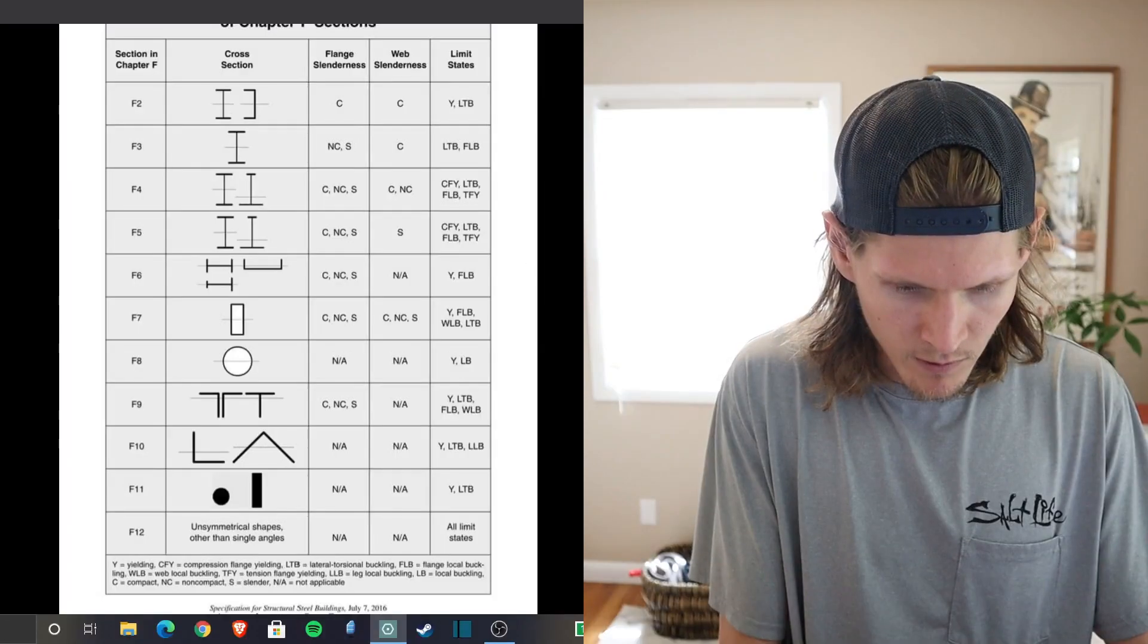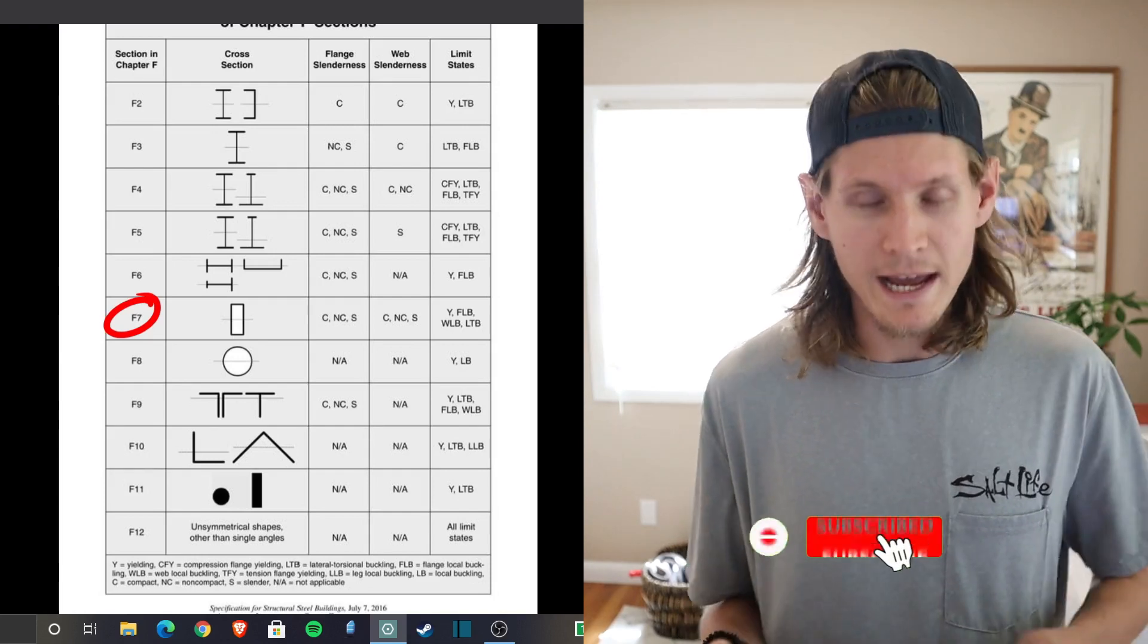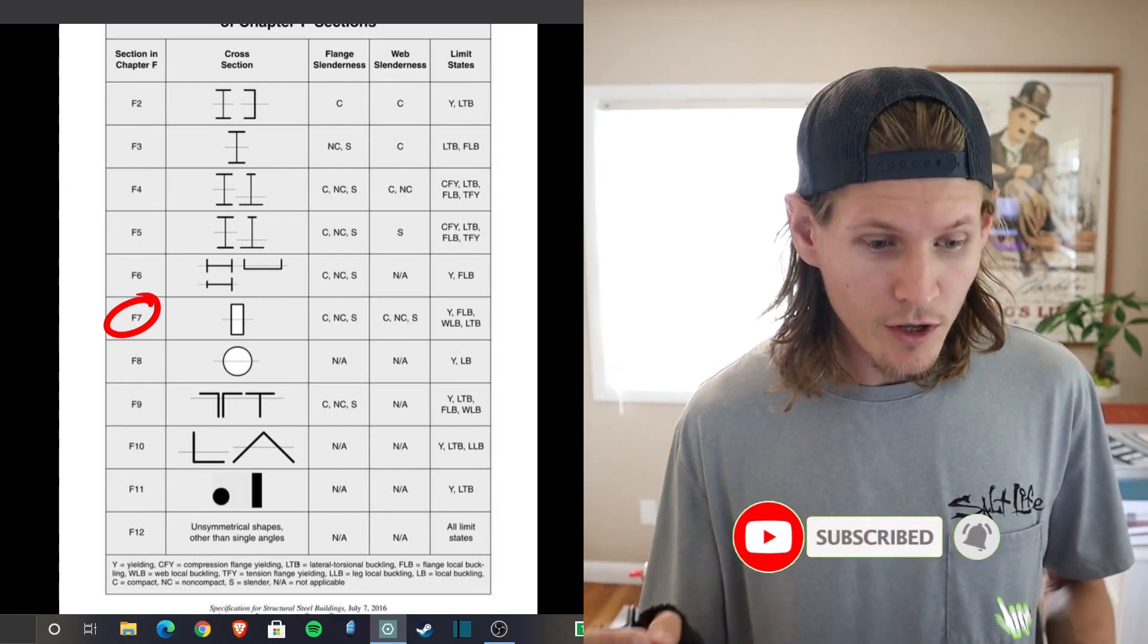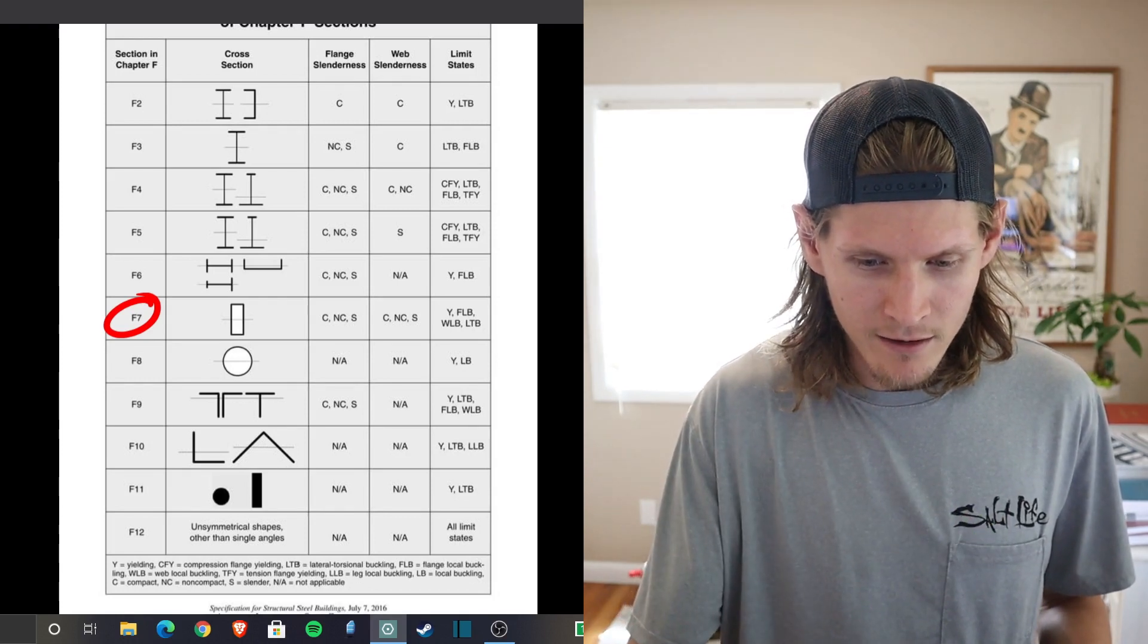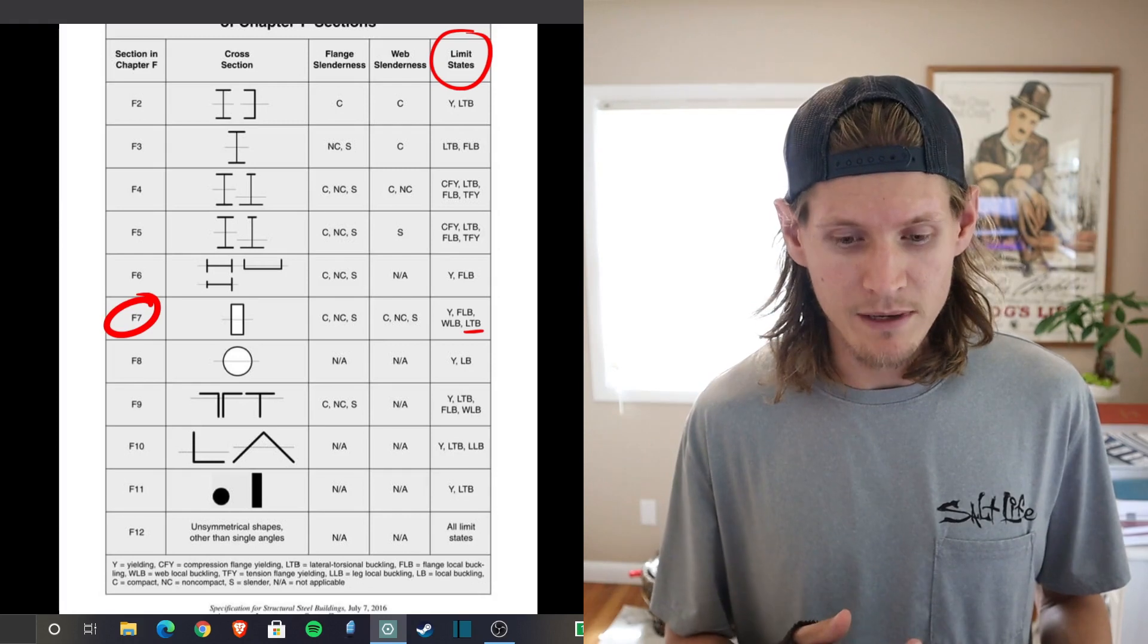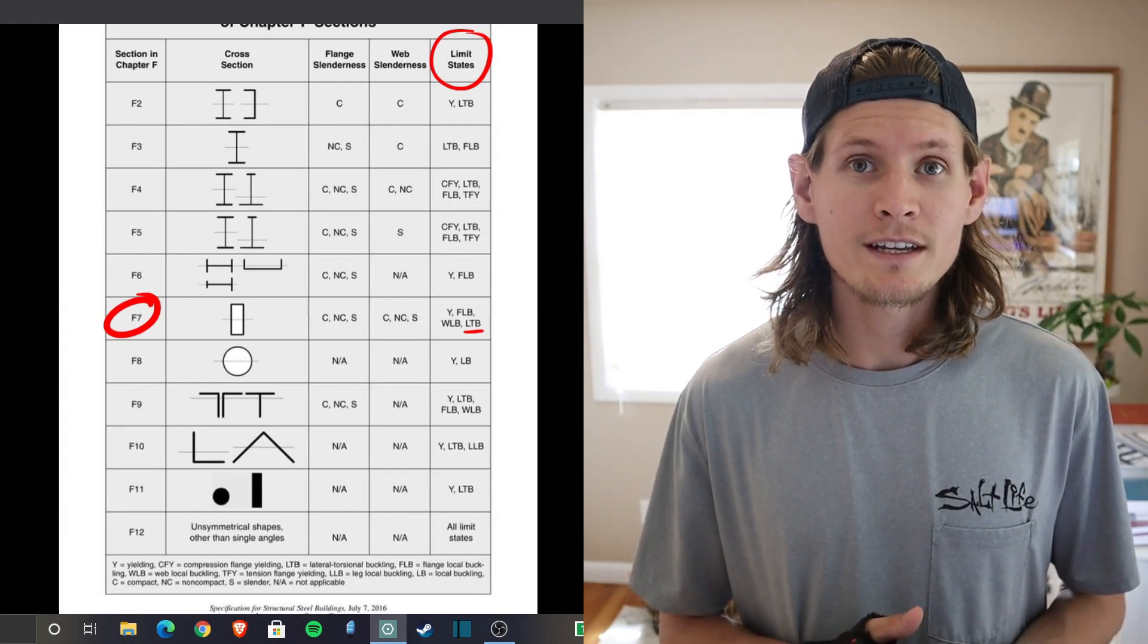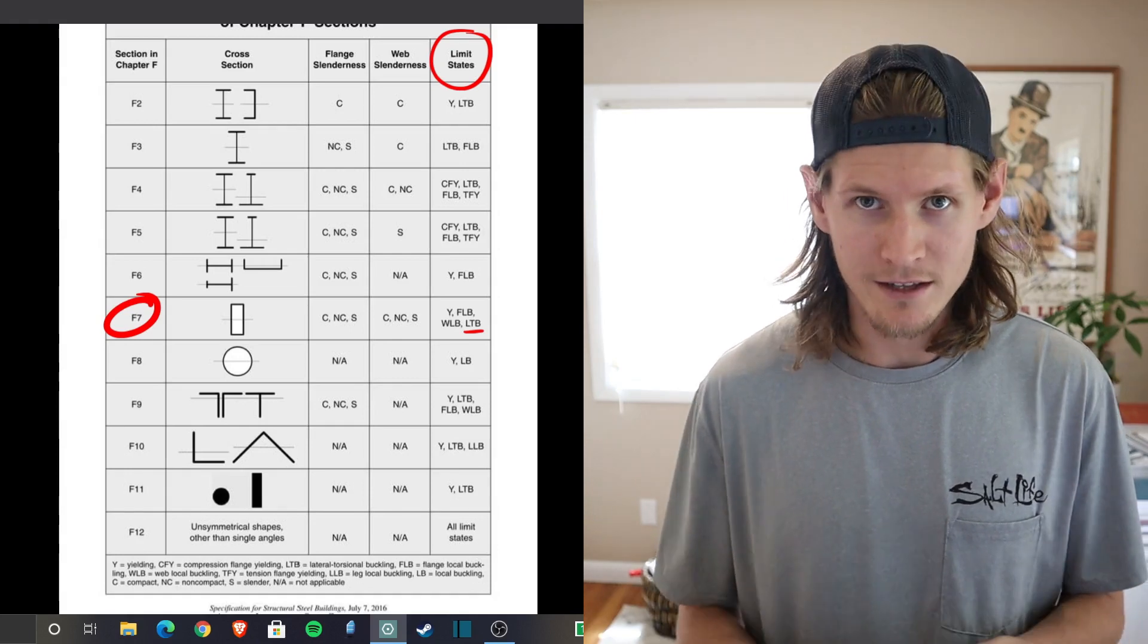Specifically we're talking about the design of members for flexure and section F7 which refers to HSS members. You will notice in the 15th edition they have actually updated their limit state to include lateral torsional buckling, LTB. This was not included in the 14th edition as a limit state and has now been brought in and included in the new 15th edition.